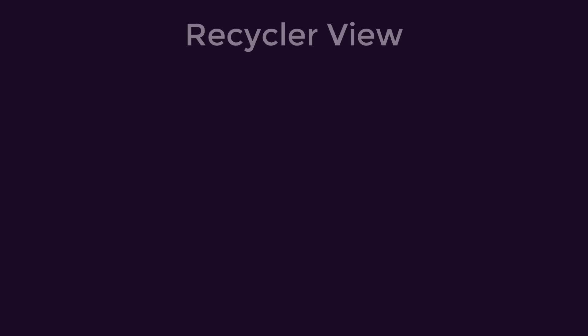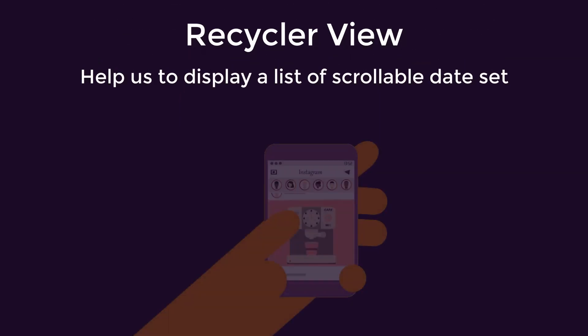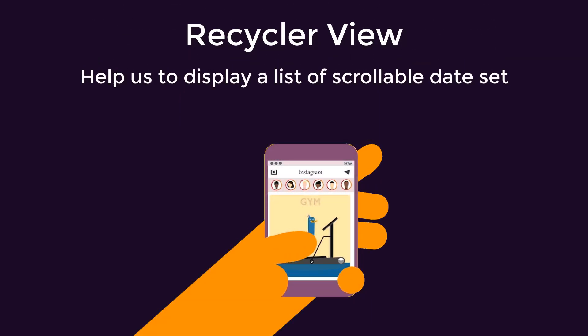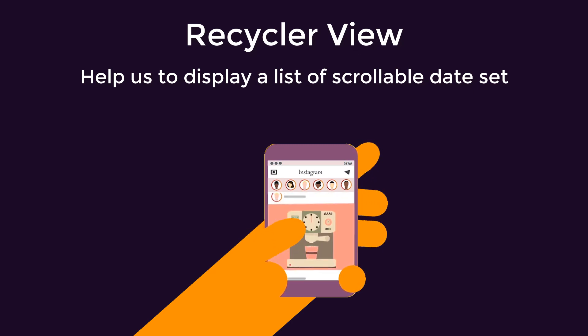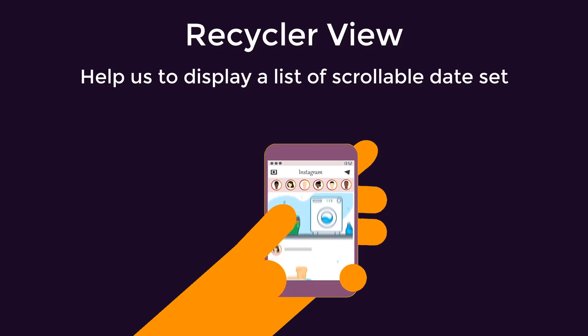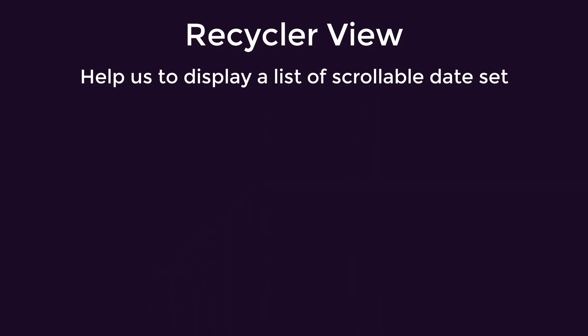Hey guys and welcome back to a new video. After learning about most of the views and view groups that we often use as Android developers, it's time to learn about one of the most important view groups in Android: RecyclerView. RecyclerView allows us to display a scrollable view of sub-views, or a list of scrollable items. Nearly no application doesn't have a scrollable UI component to display items like posts, chats, or articles. RecyclerView is considered a more efficient and reliable option than other views like ListView or GridView.